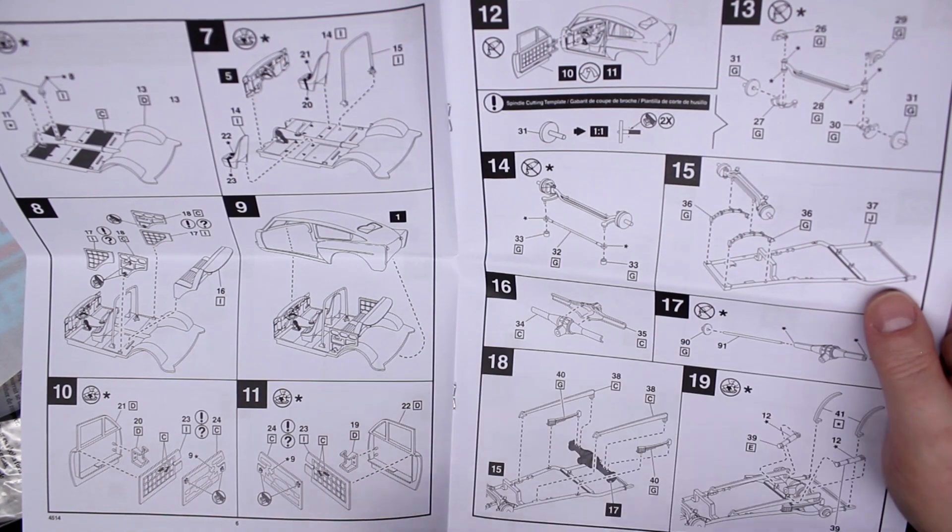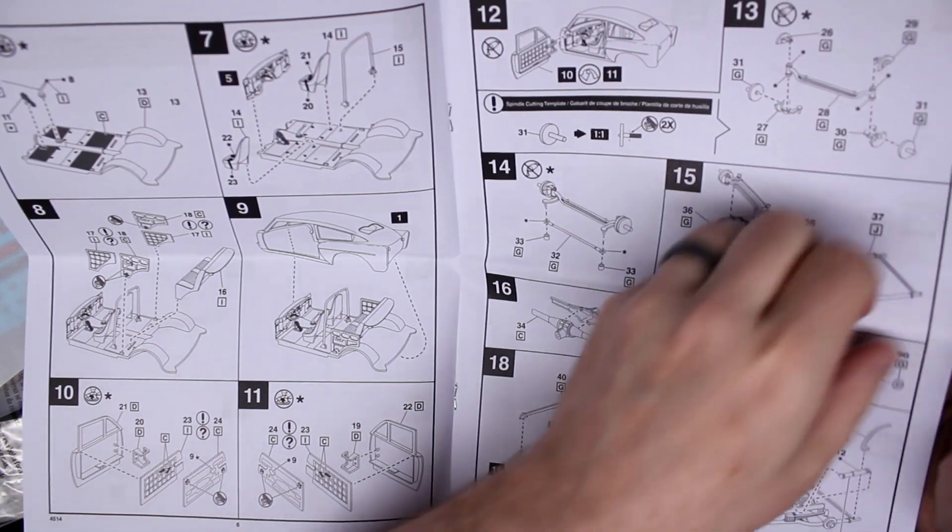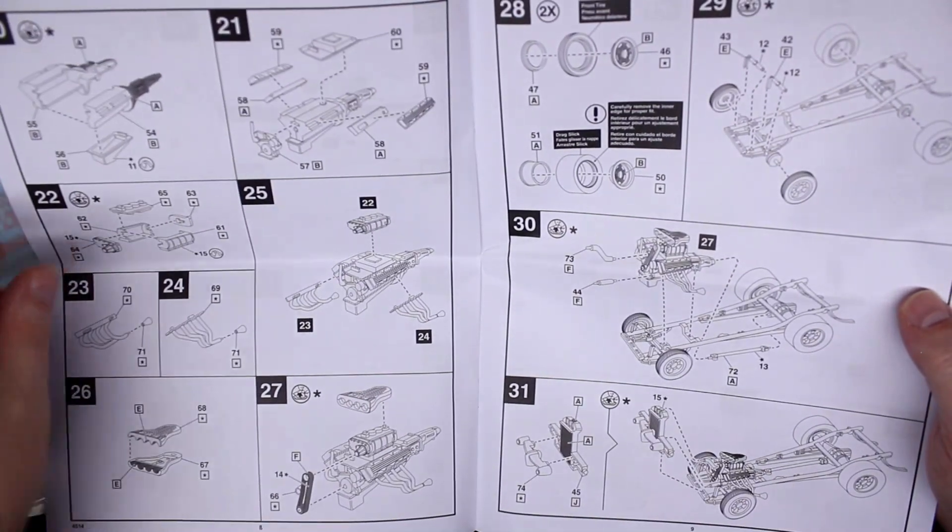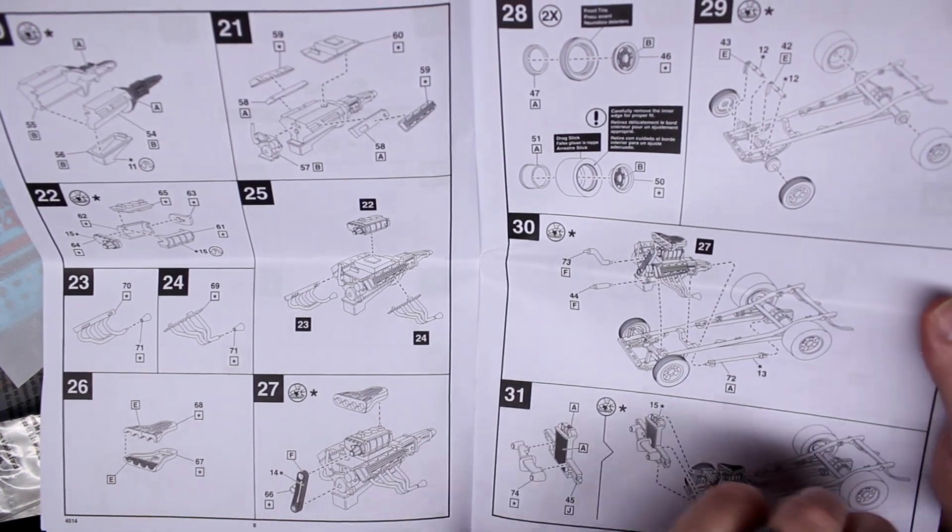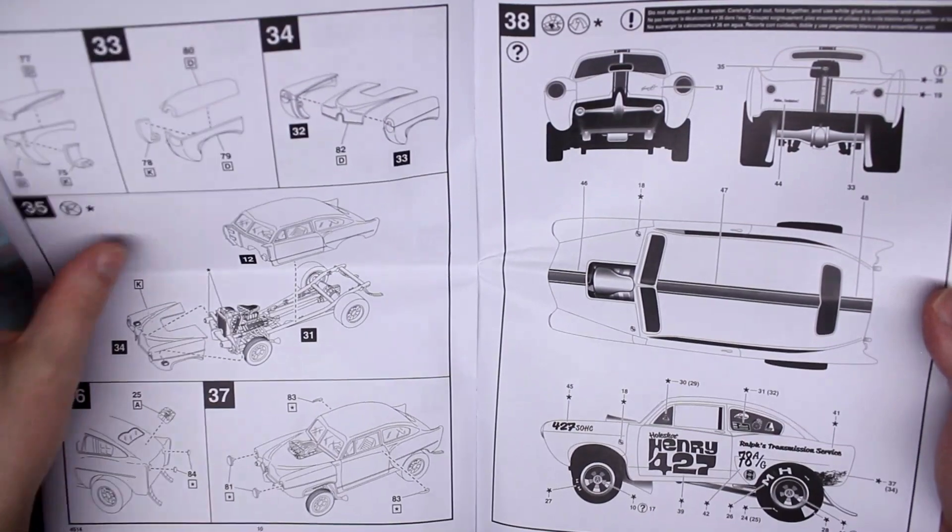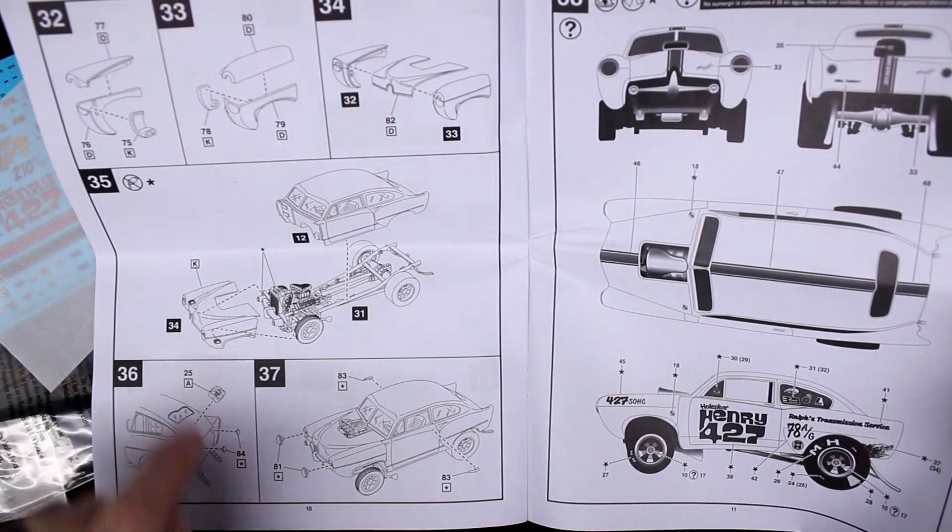So there's a straight axle and those leaf springs for the front. Engine with headers and what not. There's that front, I guess you would call that front clip. I don't know.